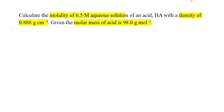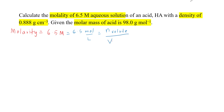So we have molarity given as 6.5 molar. Another way to write 6.5 molar is 6.5 mol per liter or mol per dm cubed. We can define molarity as the number of moles of solute divided by volume of solution. Therefore, 6.5 here means there are 6.5 mol of acid dissolved in one liter of solution.